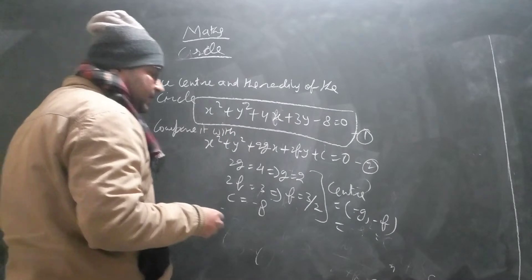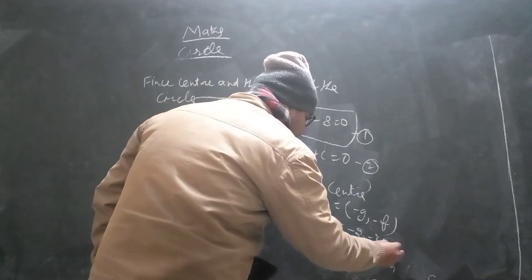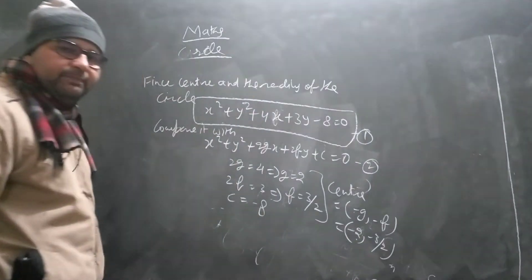So it means the given circle is centered at minus 2, minus 3 by 2. This point is the center.